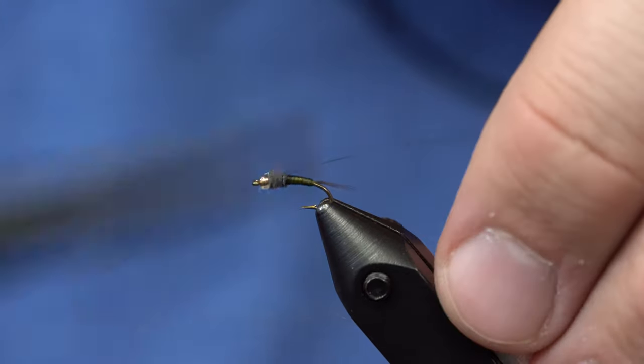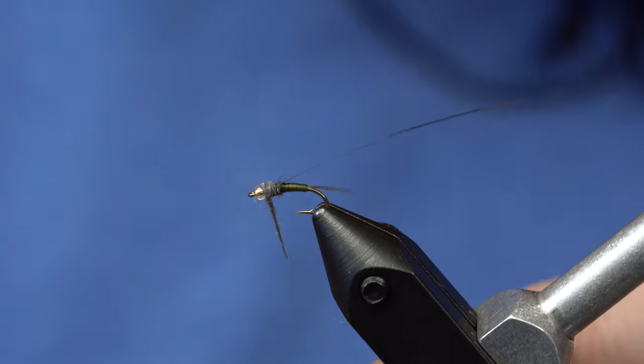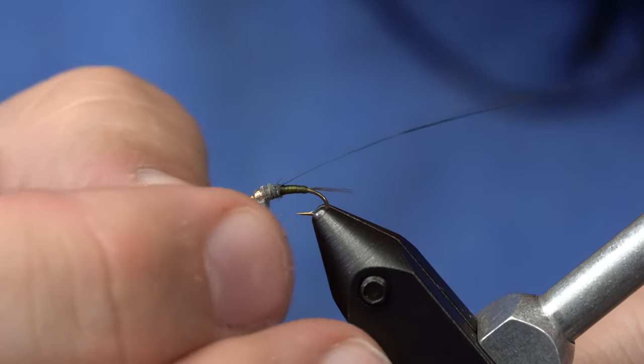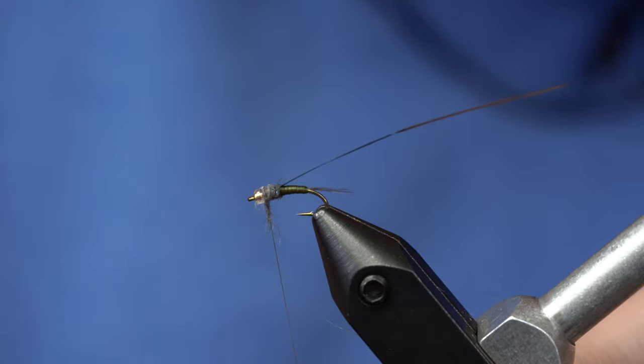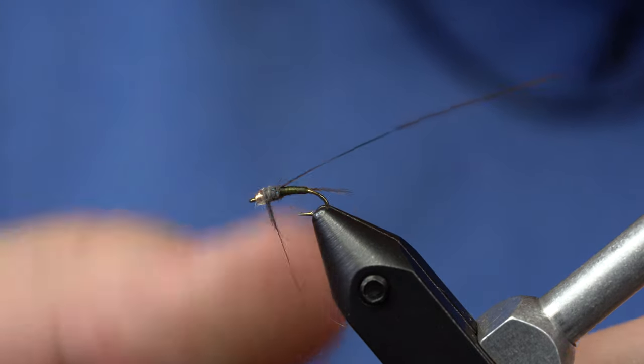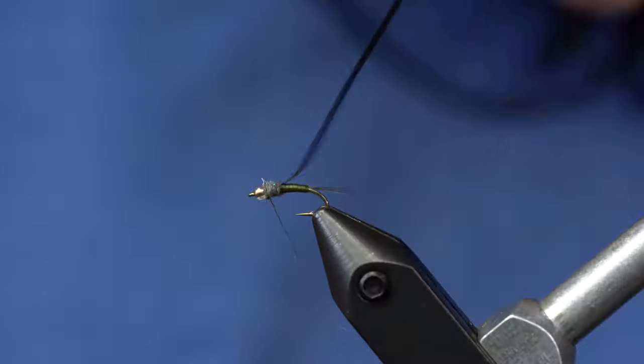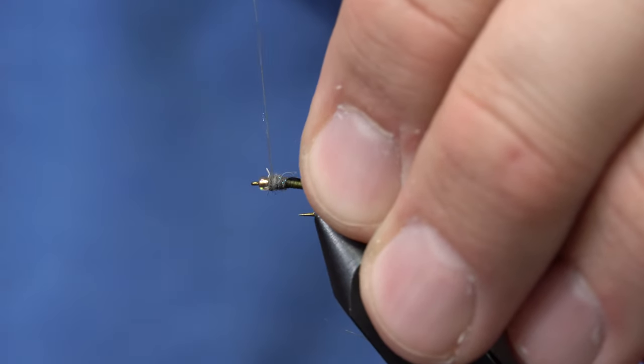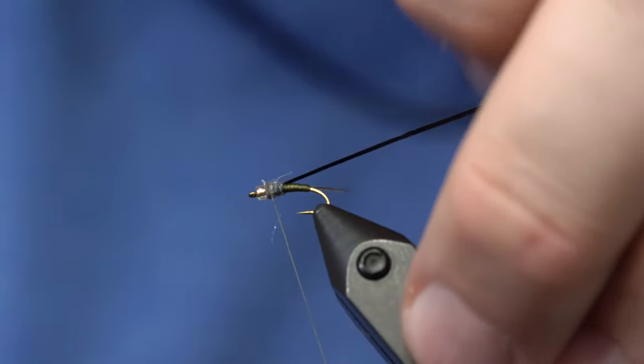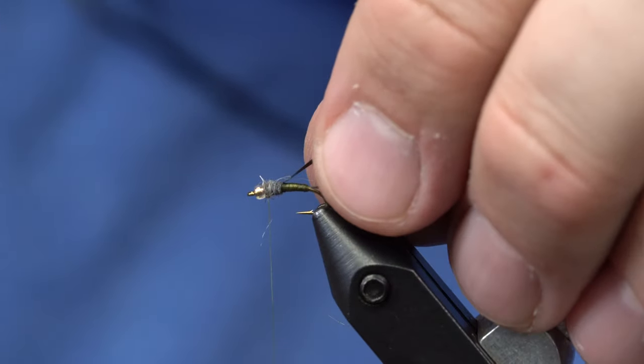And I will take that and wrap it forward. And once I get up by the bead, that's maybe a little bit too much so I'll take that off of there as best I can. Just wrap that and then make sure that the thread is a little bit back on that dubbing, not all the way up by the bead.